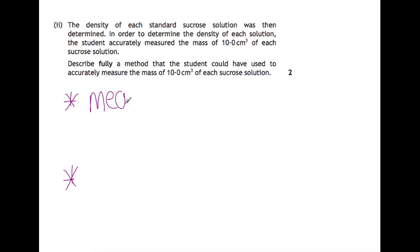So to measure out 10 cm³, the most appropriate way of measuring 10 cm³ accurately would be to use a pipette. You then have two choices for your weighing. You can either place some sort of beaker onto the balance and tare the balance and then put your 10 cm³ in.